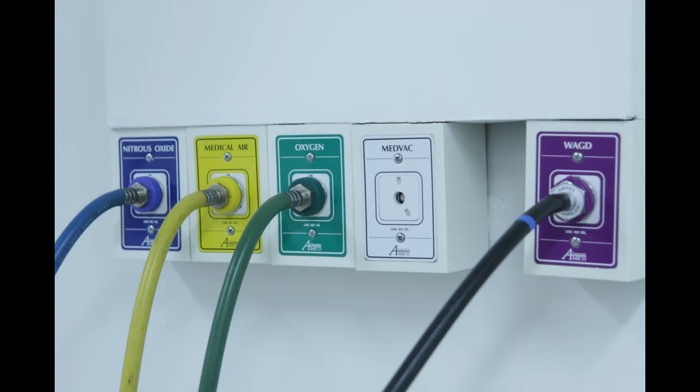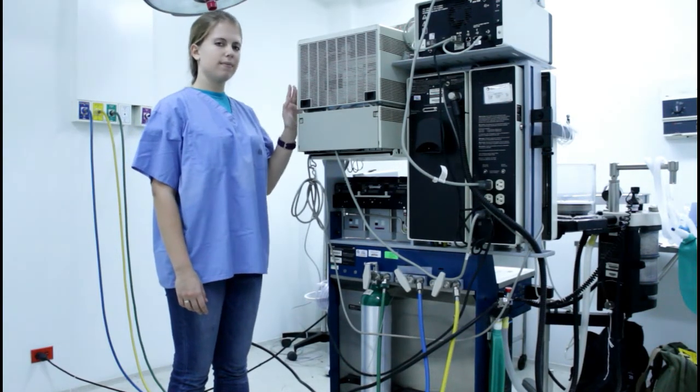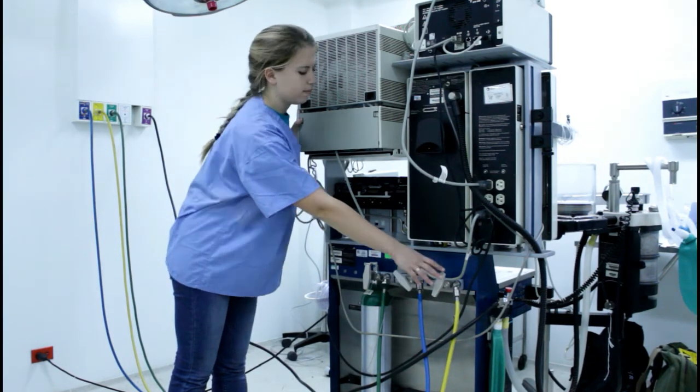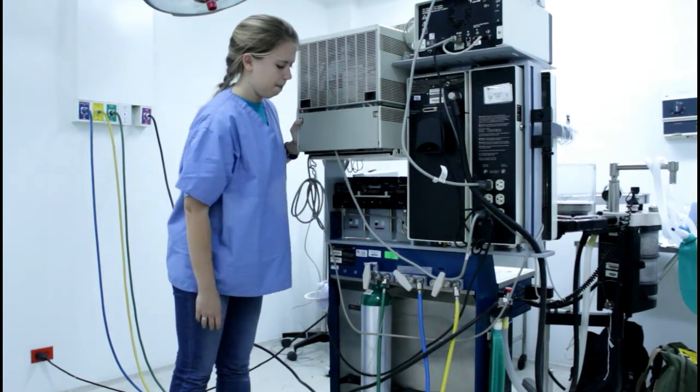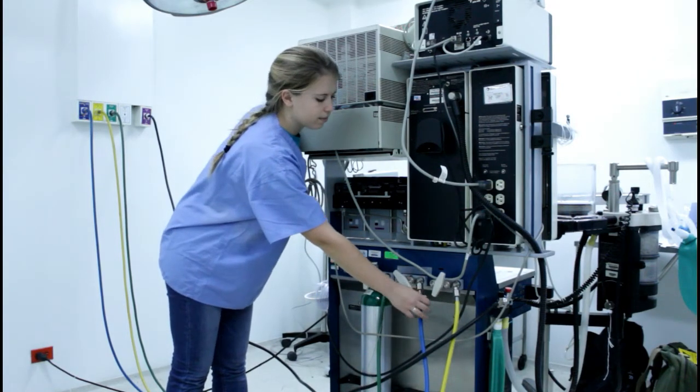In this video, oxygen is green, nitrous oxide is blue, medical air is yellow, and the output hose is purple. The central supply is used under normal conditions. Issues such as power outages may force the use of cylinders. The central supply wall outlets connect to ports above the cylinders on the anesthesia machine using thick tubes.